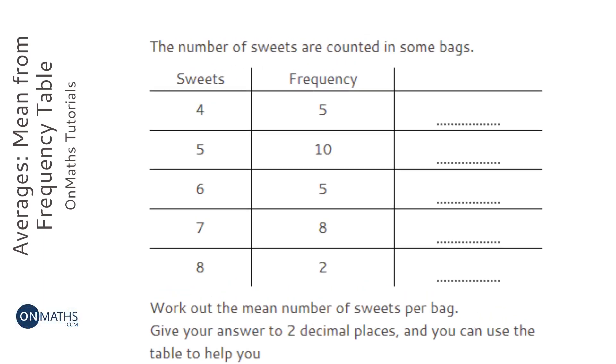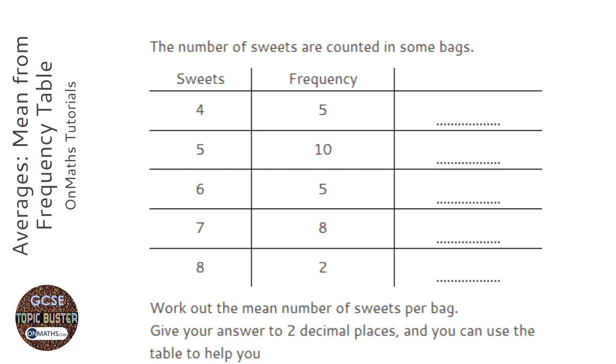To calculate the mean, what we do is add up all the numbers and divide them by the amount of numbers. Now this is shown as a table for this.